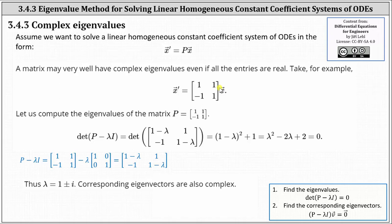A matrix may very well have complex eigenvalues even if all the entries are real. Take, for example, the system represented by X prime equals the two-by-two matrix with entries one, one, negative one, one times X. Recall to solve the system, the first step is to determine the eigenvalues by setting up the determinant of P minus lambda I equals zero and solving for lambda.